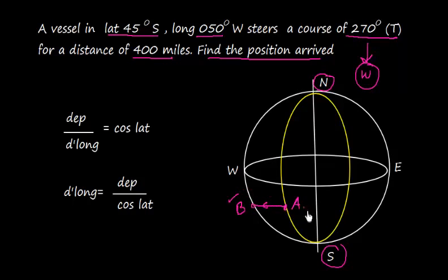Well, this is an example of parallel sailing, so the vessel is sailing along the same parallel of latitude. This is the parallel of latitude. Now let's talk about the latitude: latitude is 45 degrees south, so arrival latitude is also going to be the same, 45 degrees south. That makes sense because the latitude is going to remain the same.